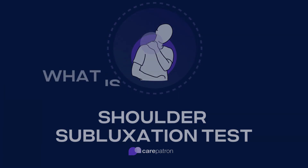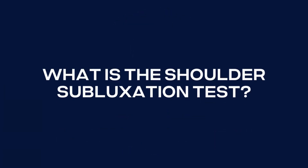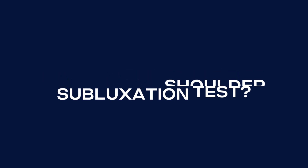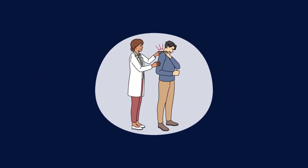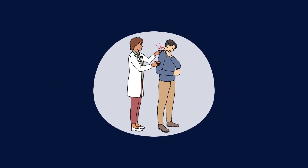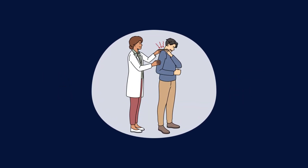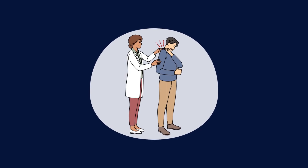What is the shoulder subluxation test? A shoulder subluxation test is a comprehensive clinical evaluation conducted by healthcare professionals to identify the presence of partial shoulder dislocation, also known as subluxation.